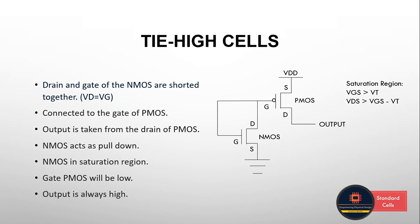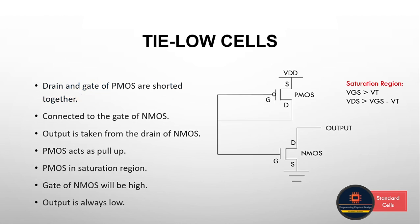In the Tie High Cell, the NMOS is in saturation because the drain and gate are shorted and connected to the PMOS gate terminal. NMOS acts as a pull-down transistor, so the PMOS input is zero. When PMOS gets an input of zero, it automatically acts as a pull-up transistor, and hence the output is always high. That's how the Tie High Cell works.